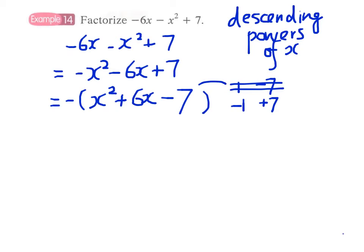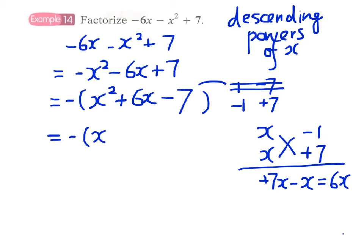Obviously, 1 and -7 does not work. Therefore, we write the factors in vertical format: (x - 1) times (x + 7). If we cross multiply it: +7x - x = 6x. Therefore, the answer will be -(x - 1)(x + 7).